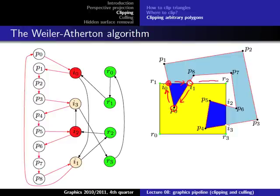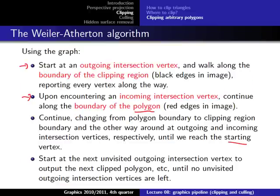Then we keep walking until we find the next outgoing intersection vertex and do the same again — switching to go inside the polygon, reporting all these vertices, giving us the four vertices of the second clipped polygon. Then we're done because there are no further outgoing intersection vertices.